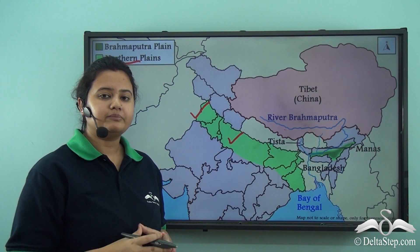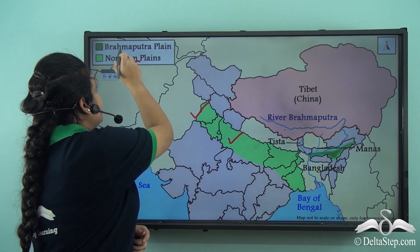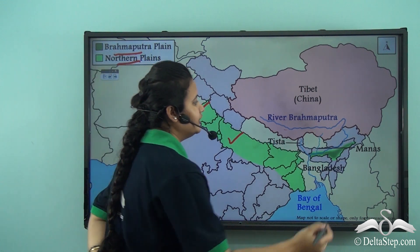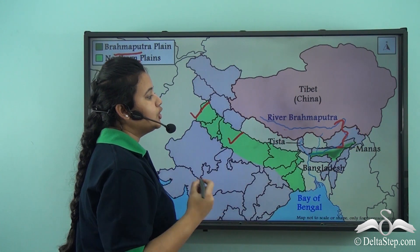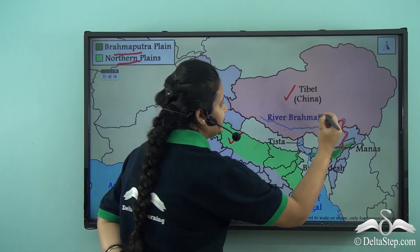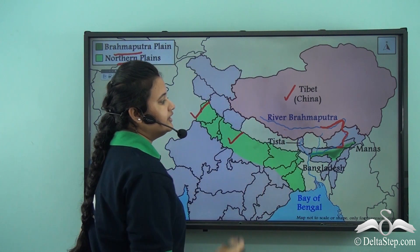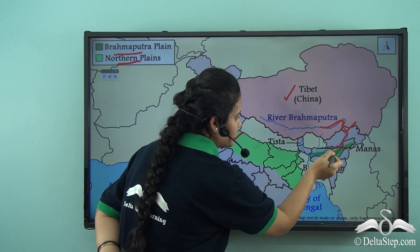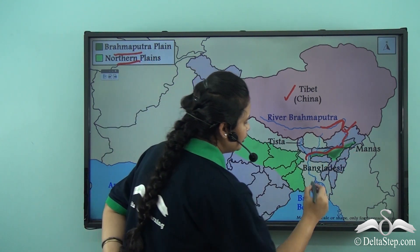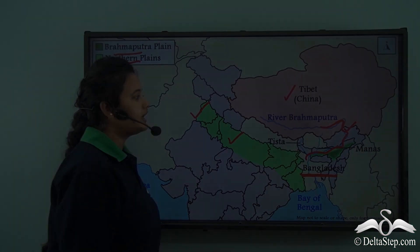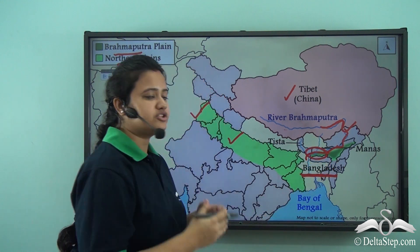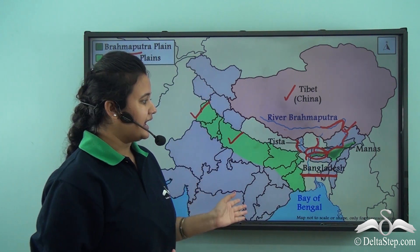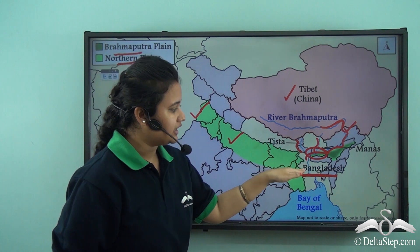The last division of the Northern Plains is the Brahmaputra Plain, which is drained by River Brahmaputra. River Brahmaputra originates in Tibet, China, and flows eastwards. It enters India through the state of Arunachal Pradesh, then flows across a major part of Assam before flowing into Bangladesh. In the state of Assam, two important tributaries — Tista and Manas — join it, and together they drain into Bangladesh.